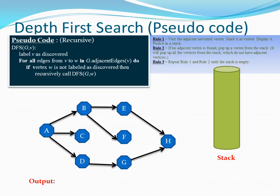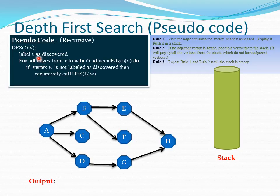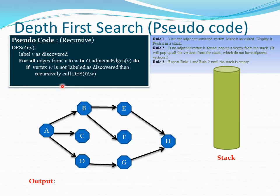Now let us go through the pseudocode for the DFS algorithm along with our previous animation. The DFS function takes parameters G and V, where G represents the whole graph and V represents the starting node. Inside the function, we first label V as discovered, then for all edges from V to W in the adjacent edges of V, we iterate. For every node in the iteration, if vertex W is not labeled as discovered, we recursively call the DFS function with the same graph and W.